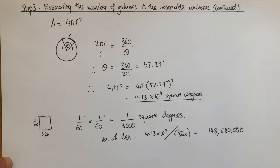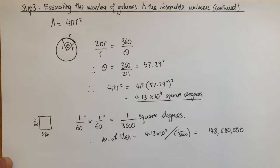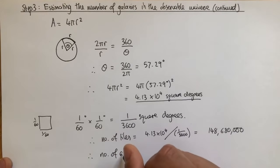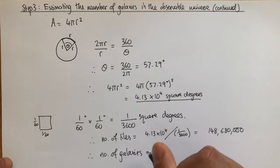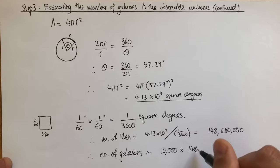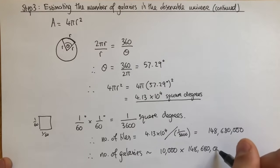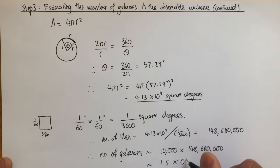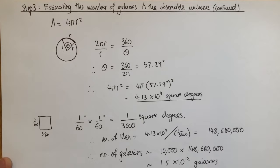We've seen that there are approximately 10,000 galaxies in each tile. Therefore, the number of galaxies in the observable universe is roughly 10,000 multiplied by 148,680,000, giving a value of close to 1.5×10¹² galaxies, or 1.5 trillion galaxies in the observable universe.